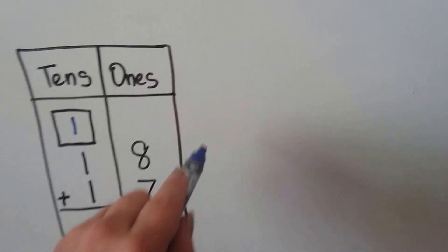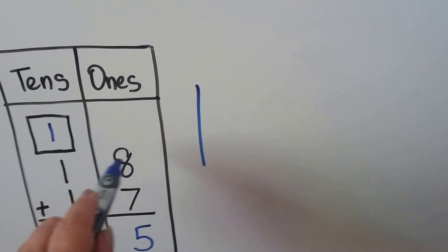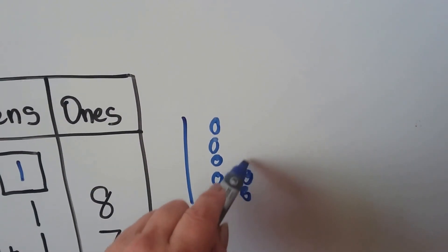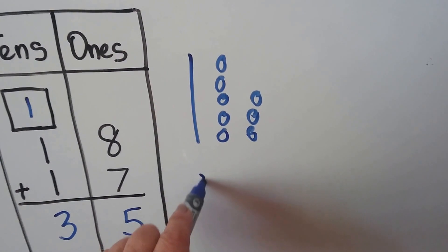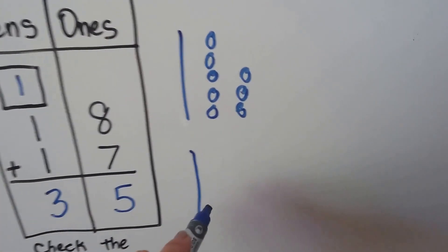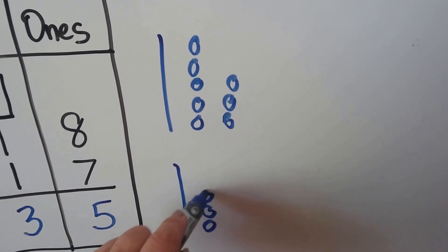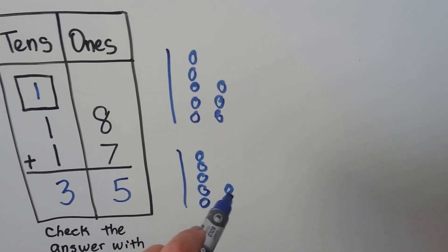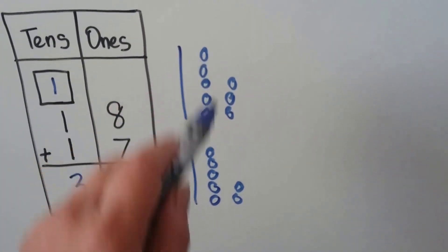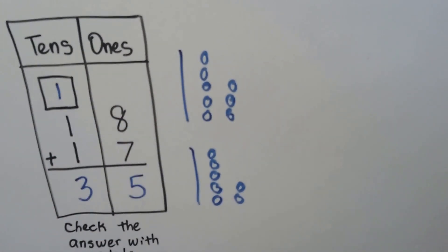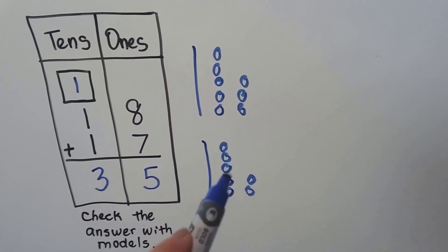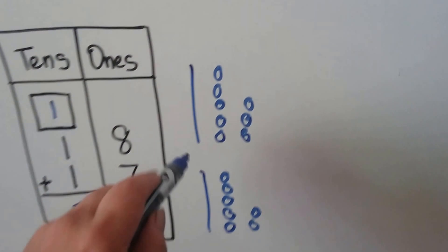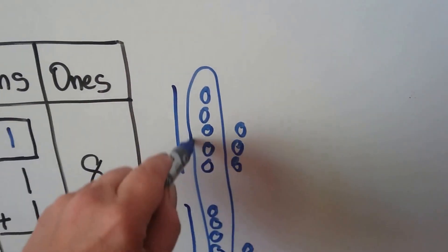Now we can check with models. We'll make one long bar for a 10 and we need 8 little ones. We need one 10 for the 17, so we make one long bar and 7 little circles. And if we make it in groups of 5 and then the rest of them, when we go to circle the ones to make a 10, we have a 5 and a 5. That's why I made a 5 and then a 2, and a 5 and then a 3 — so I can just circle this as a group of 10 because it's 5 plus 5.